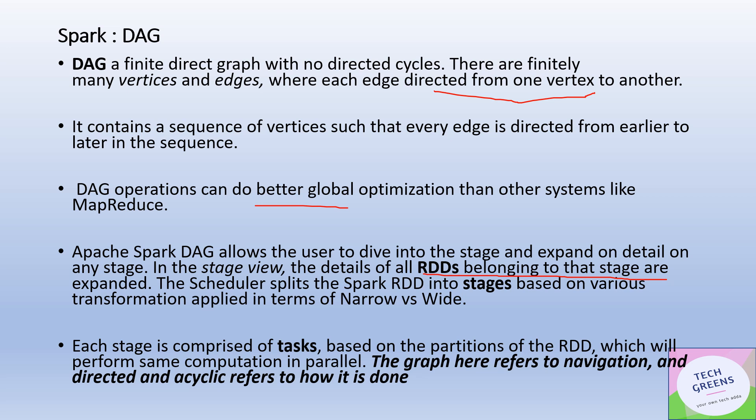The scheduler splits the Spark RDD into different stages based on whether they are narrow or wide transformations. Each stage comprises a number of different tasks, and these tasks are based on the partitions of the RDD, so that the same computation can be performed in parallel on different partitions of the data.